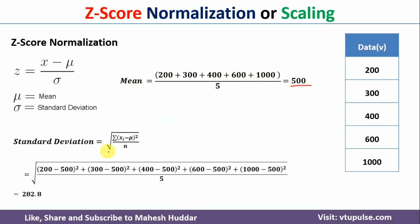Standard deviation is calculated using the formula: square root of the summation of (x_i - μ)² divided by n, where x_i is the current data point, μ is the mean, and n is the total number of data points. So it will become: (200 - 500)² + (300 - 500)² and so on, divided by 5 because there are 5 data points. The standard deviation comes out to 282.8.